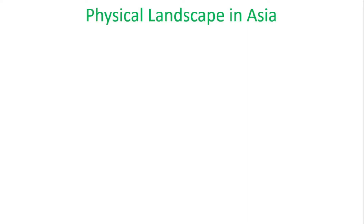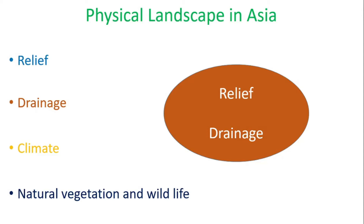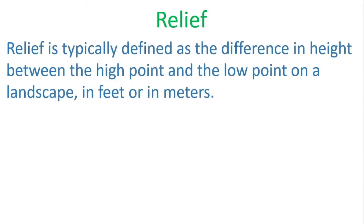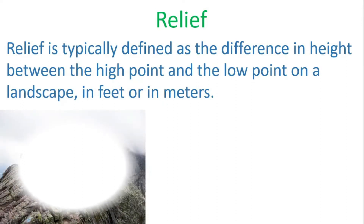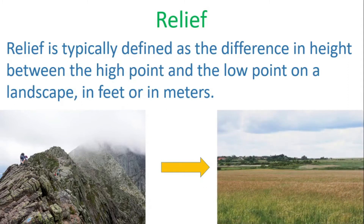Under physical landscape in Asia, we will mainly focus on relief, drainage, climate, natural vegetation and wildlife. But in this video, we will only be looking at relief and drainage. First, let's take a look at the definition of relief. Relief is typically defined as the difference in height between the high point and the low point on a landscape, in feet or in meters. Now, we will be going over the most salient topographic features in the physical landscape of Asia. What is the most specific topographic feature in the Asian region? The mountain range of Himalaya.